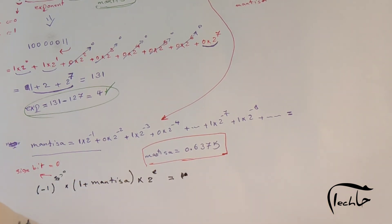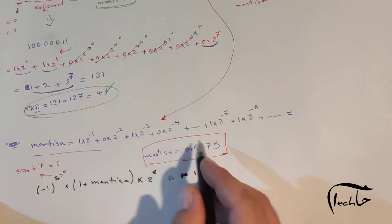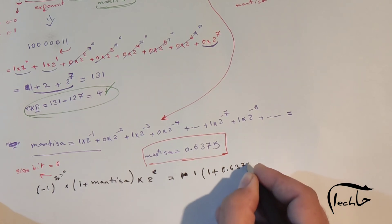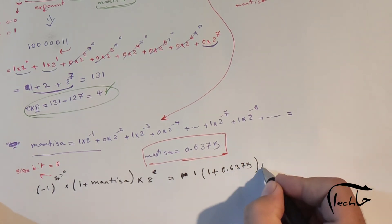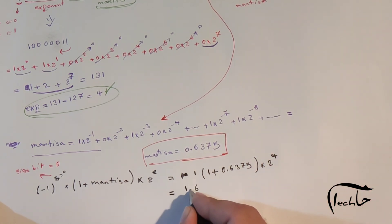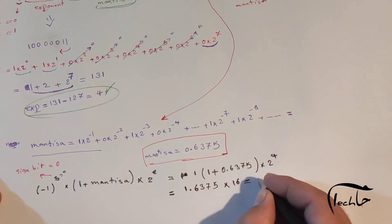This equals 1 times (1 plus 0.6375) times 2 power 4. That's 1.6375 times 16, and this equals 26.2.